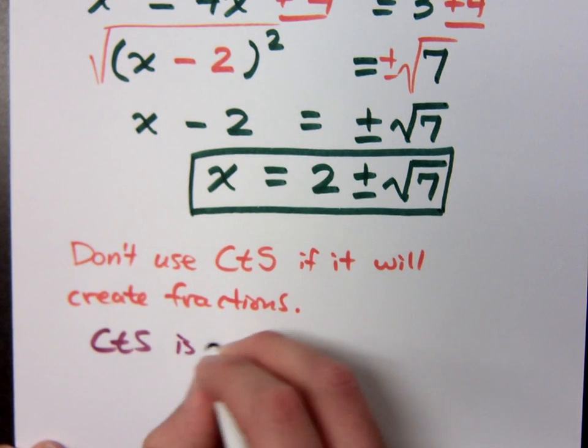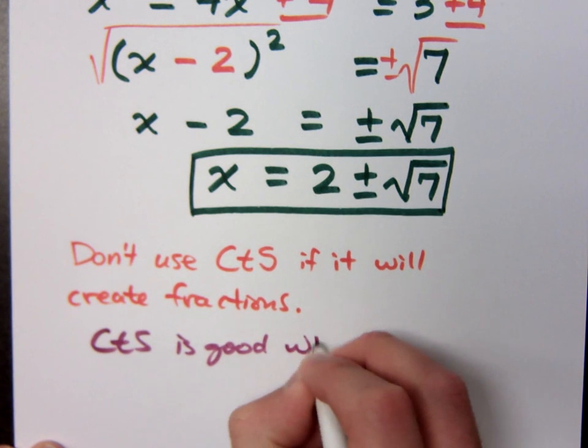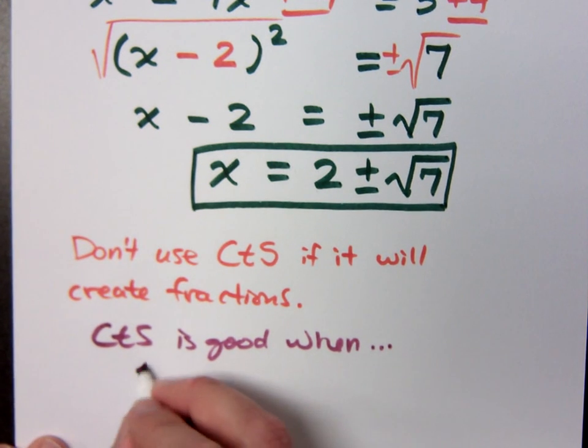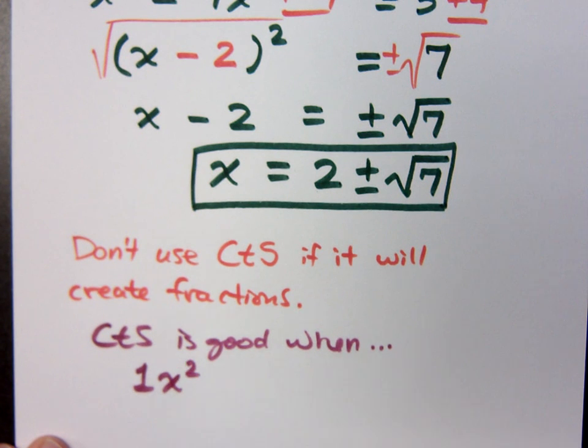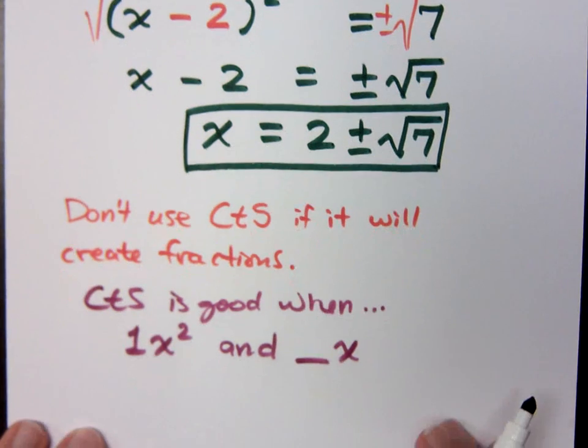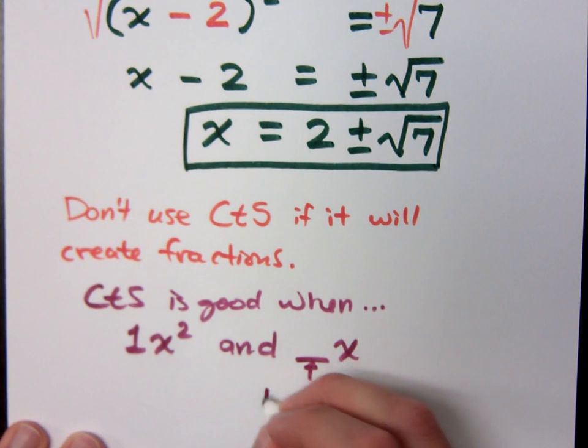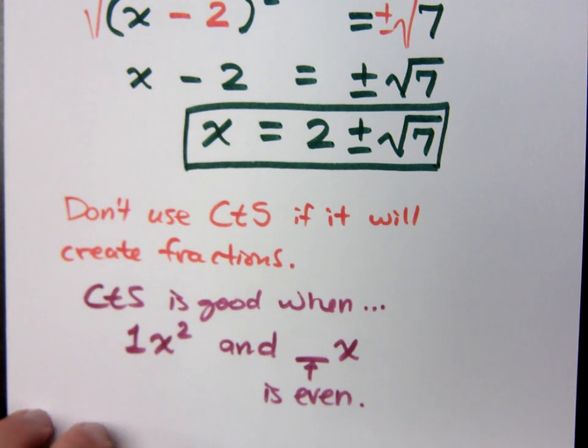Completing the square is good when you have 1x squared and the coefficient of x, whatever that guy is, is even.